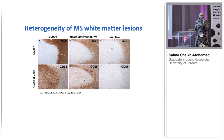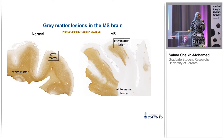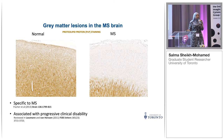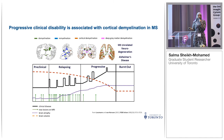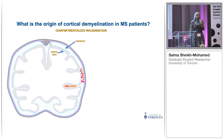When neurons become demyelinated, this communication is affected and you end up with the common symptoms of MS — things like fatigue, muscle spasticity, blurred vision, hearing problems. Eventually patients will have trouble walking and become wheelchair bound. The disease is quite prominent, especially in North America and Nordic countries. We don't know what the underlying cause is, but we do know that both genetic and environmental factors are at play.